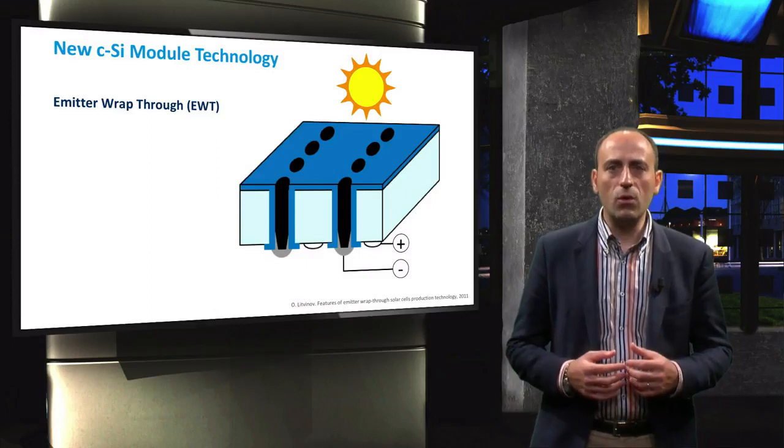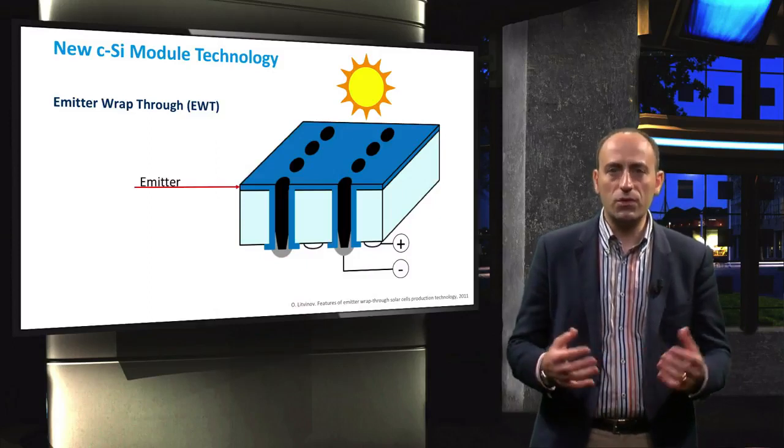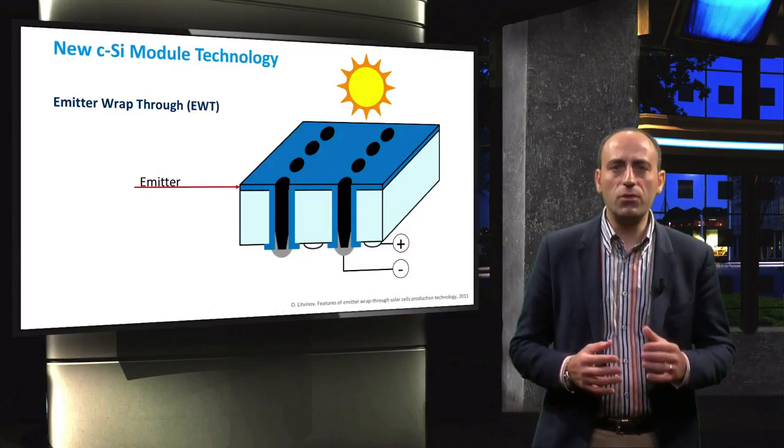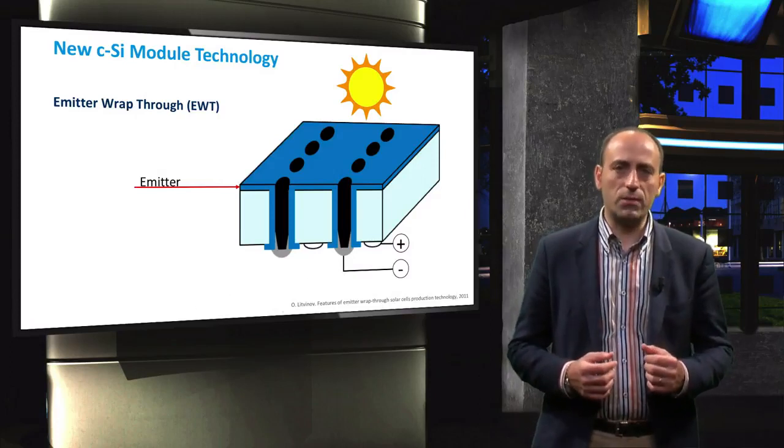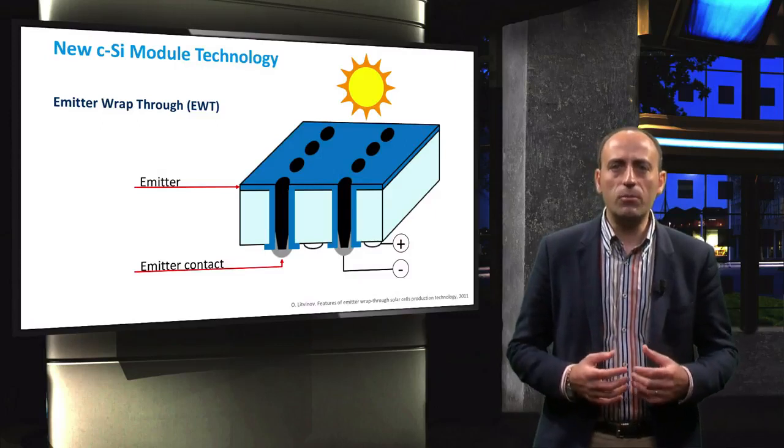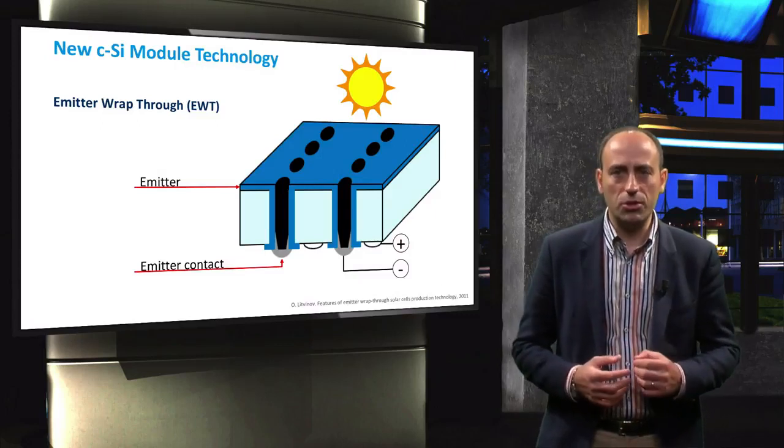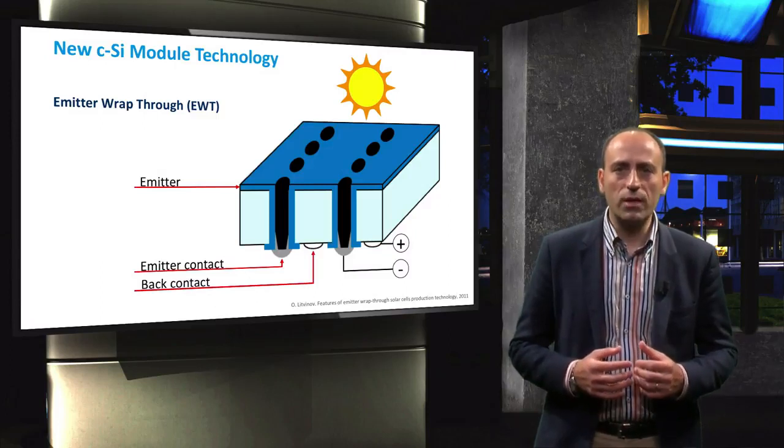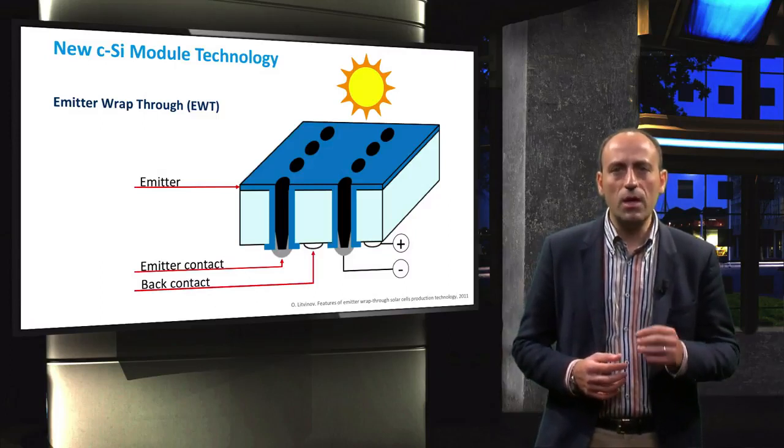For the emitter wrap-through technology, the emitter layer, which covers the whole front surface, is wrapped through the absorber layer to the rear side in a number of places. At the rear side, the emitter layer forms a contact through a metallization process. The positive back contact, or absorber contact, is positioned in strips along the back side.